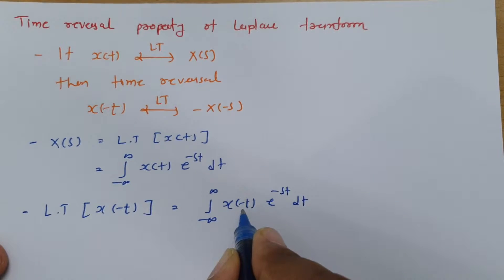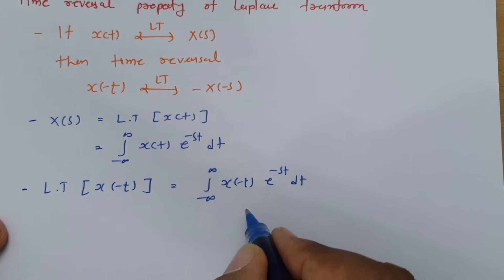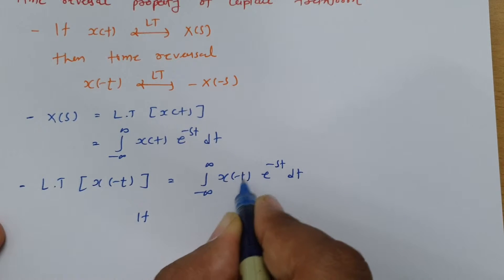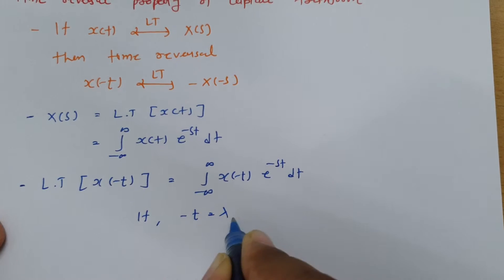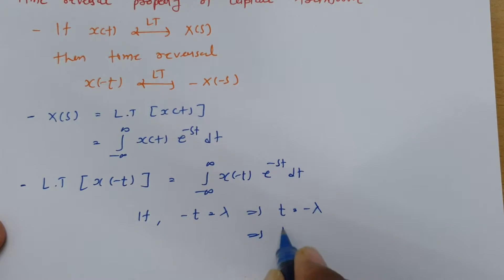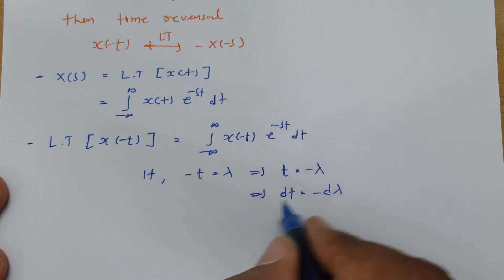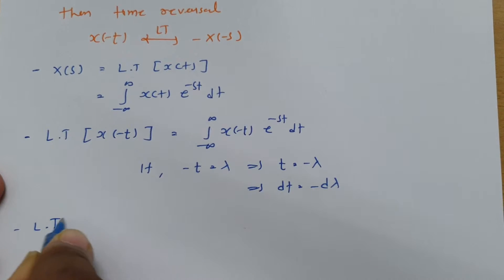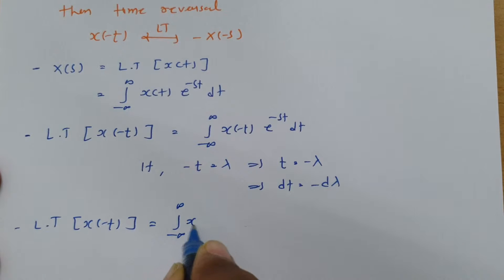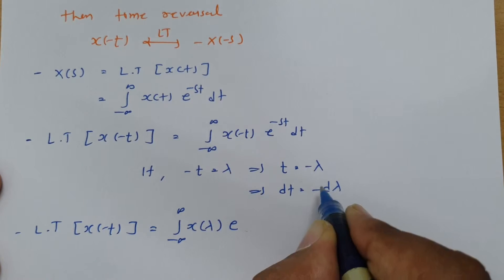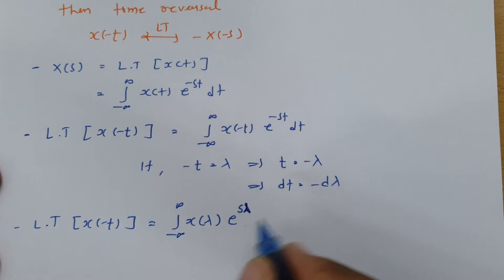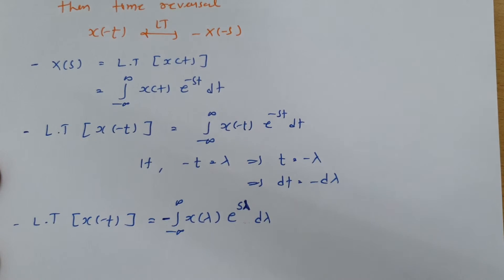Now if I consider a substitution where minus t equals lambda, then t equals minus lambda, and dt equals minus d·lambda. So placing all those things into the formula, the Laplace transform of x(-t) becomes the integration from minus infinite to infinite of x(lambda) e to the power — since t equals minus lambda, this becomes s·lambda — and instead of dt it is minus d·lambda, with the negative sign taken outside.